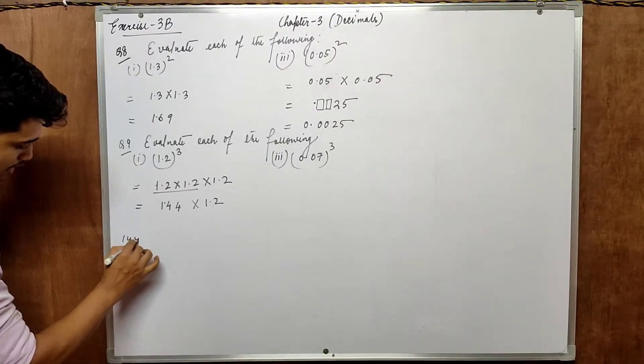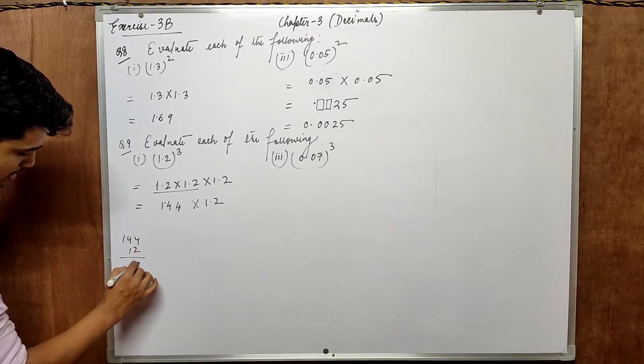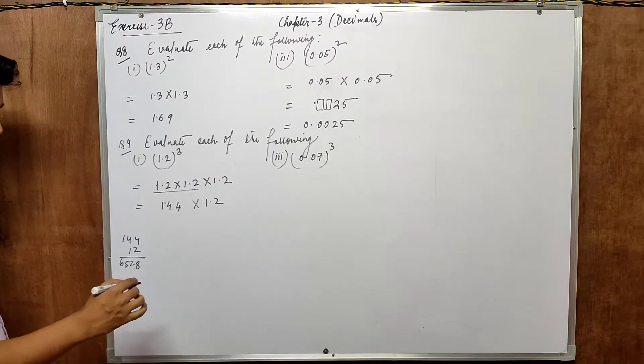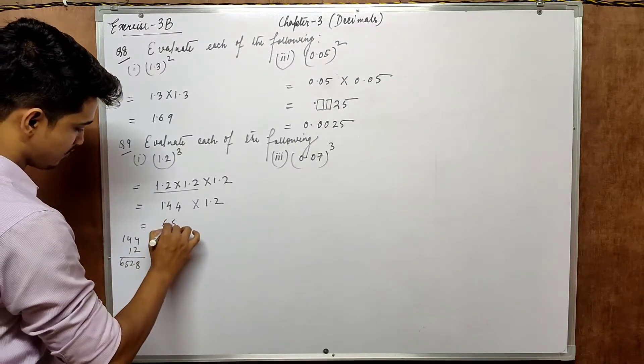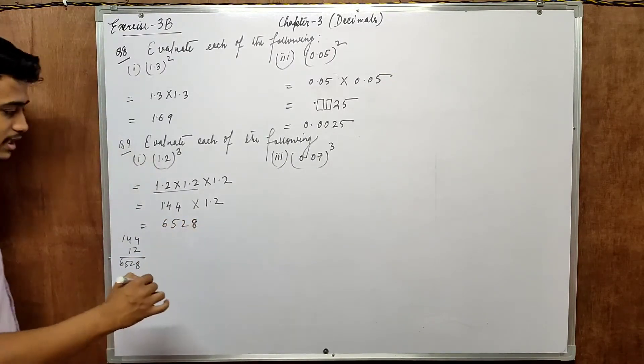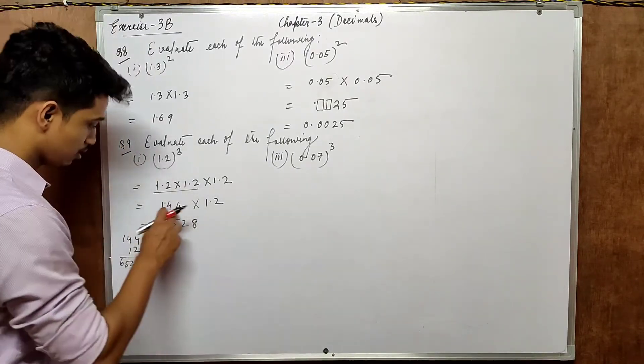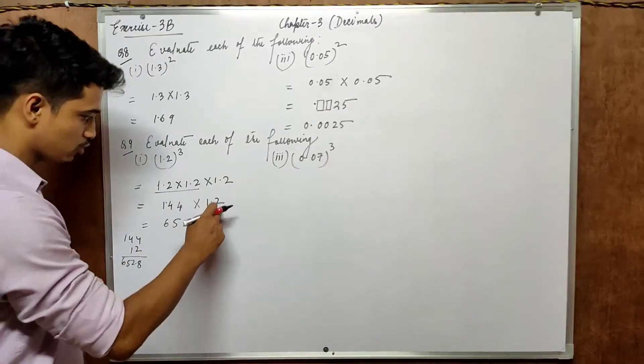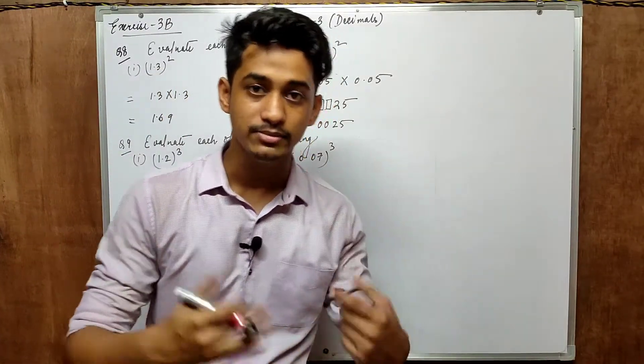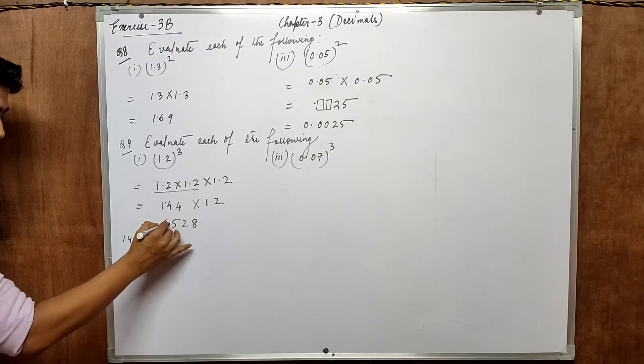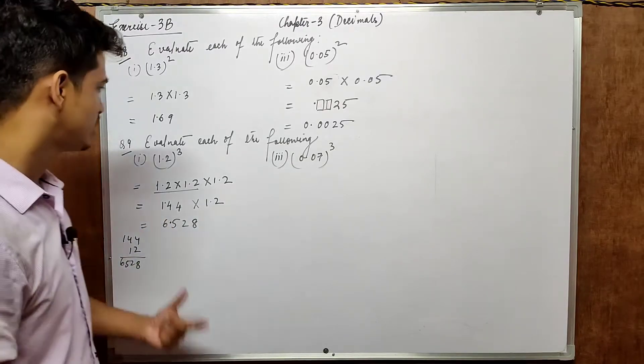And after that, multiply it again by 1.2. So 144 into 12 is 48, 4 carry 52, 5 carry 65. So 6, 5, 2, 8. Now where should I place the point? After point, 2 digits. After point, 1 digit. So 2 plus 1, it will become 3. And we need to count from the right. 1, 2, 3 put 1 point. That's the answer.